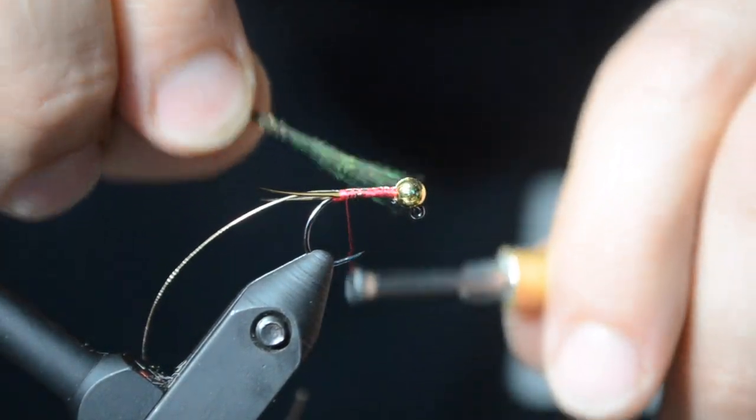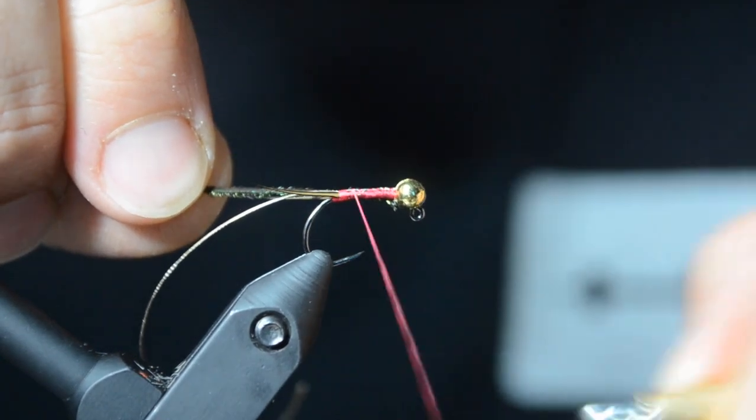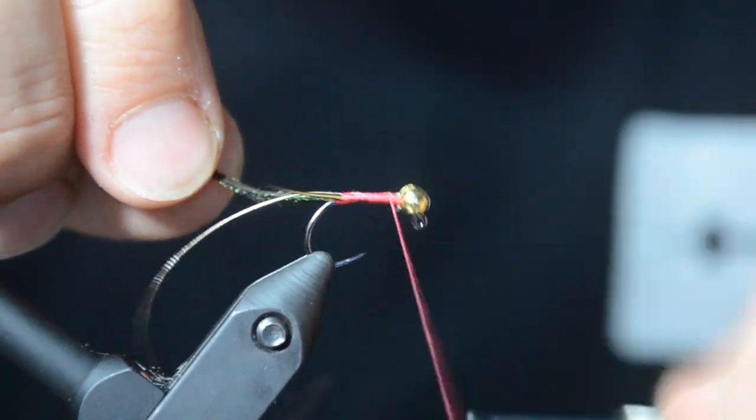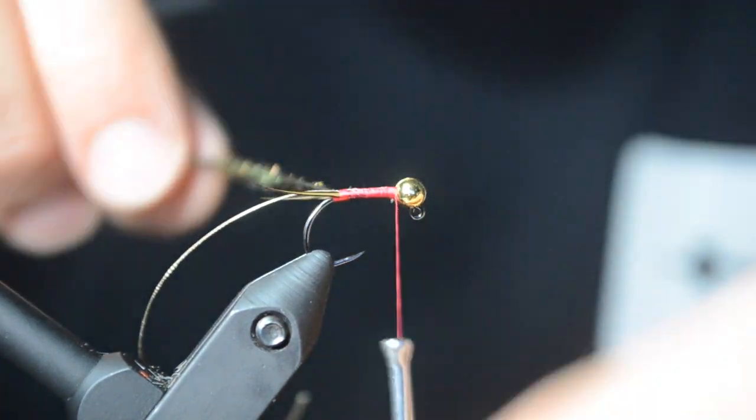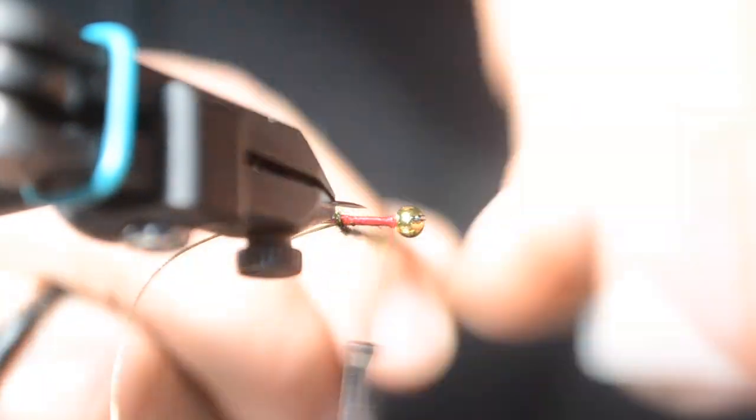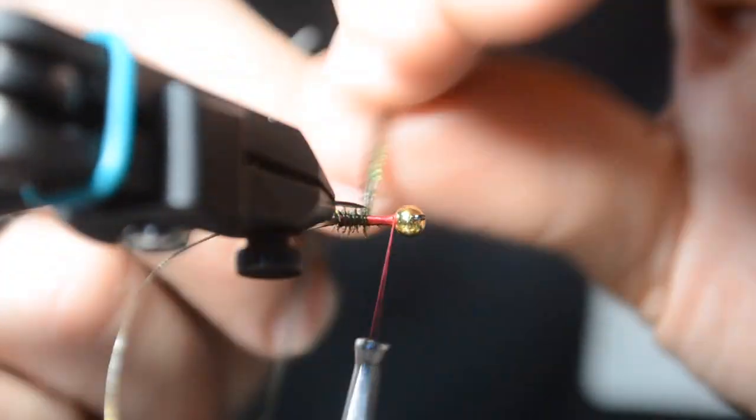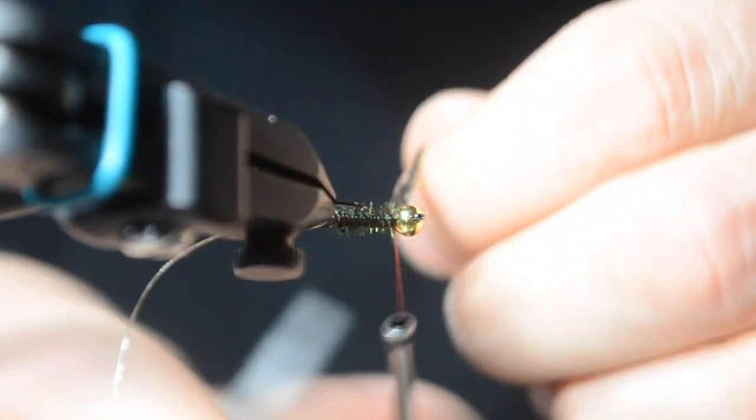Same thing with my peacock fibers. And I go ahead and, I like to invert the fly here on the rotary when I'm spinning on my peacock hurls. All the way up to the front. Lock off.